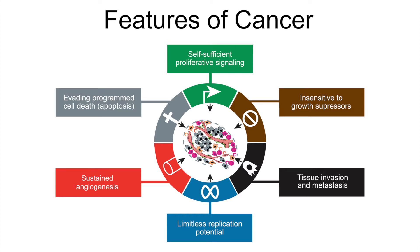The sixth is inhibition of apoptosis. The cell does have mechanisms to defend against cells that are damaged or possibly becoming cancerous by initiating apoptosis. Cancer cells inhibit apoptosis so that they can continue to grow and divide.